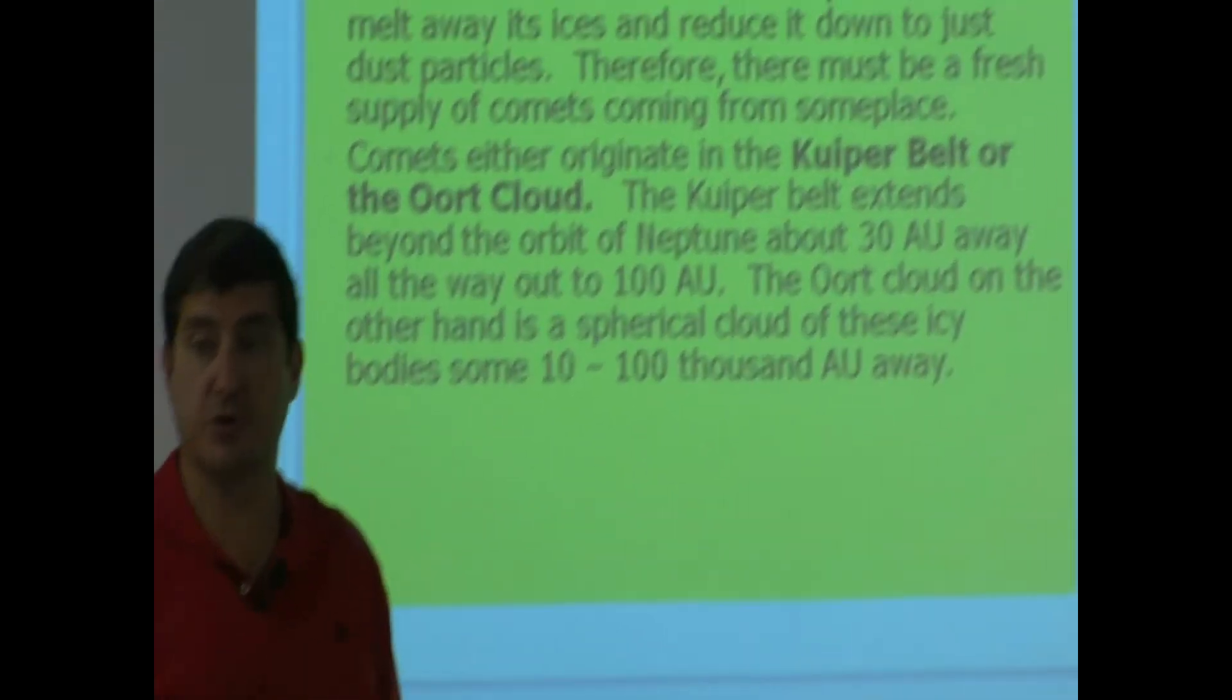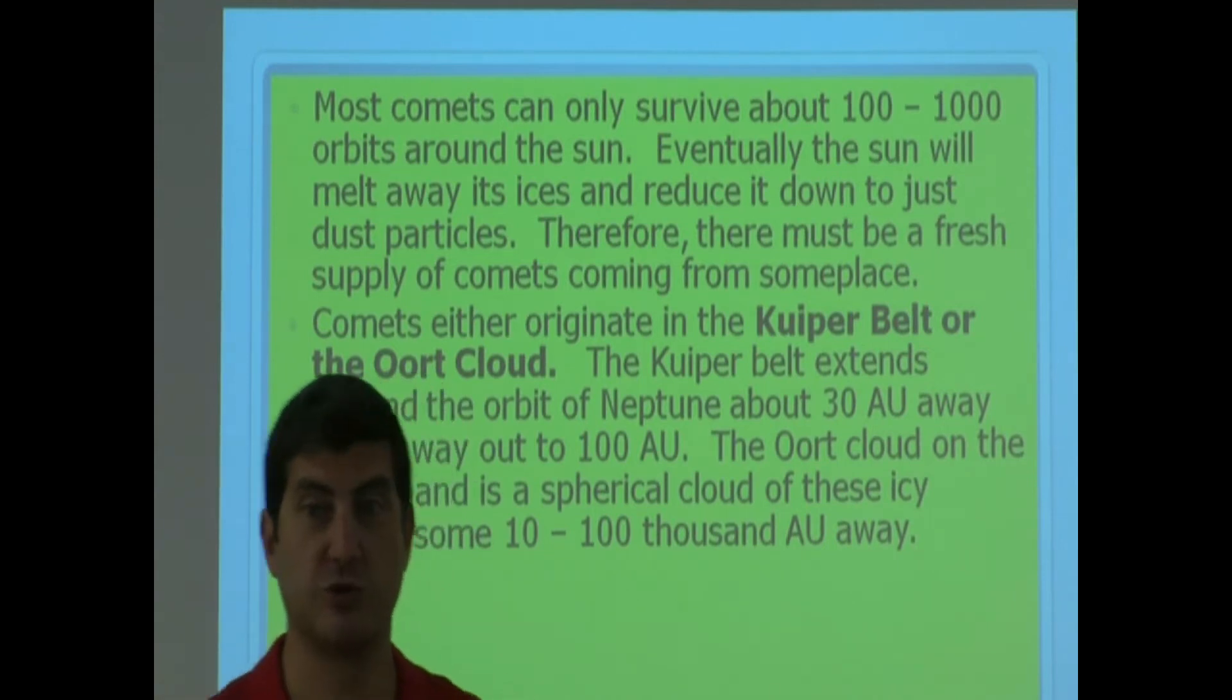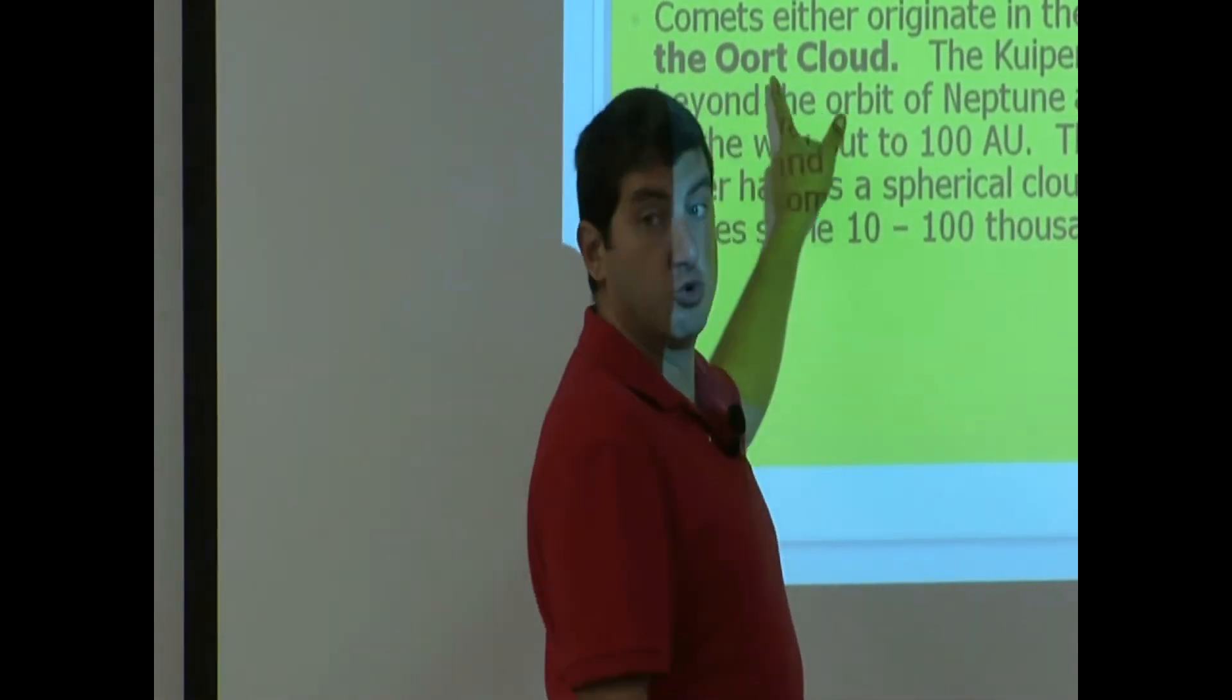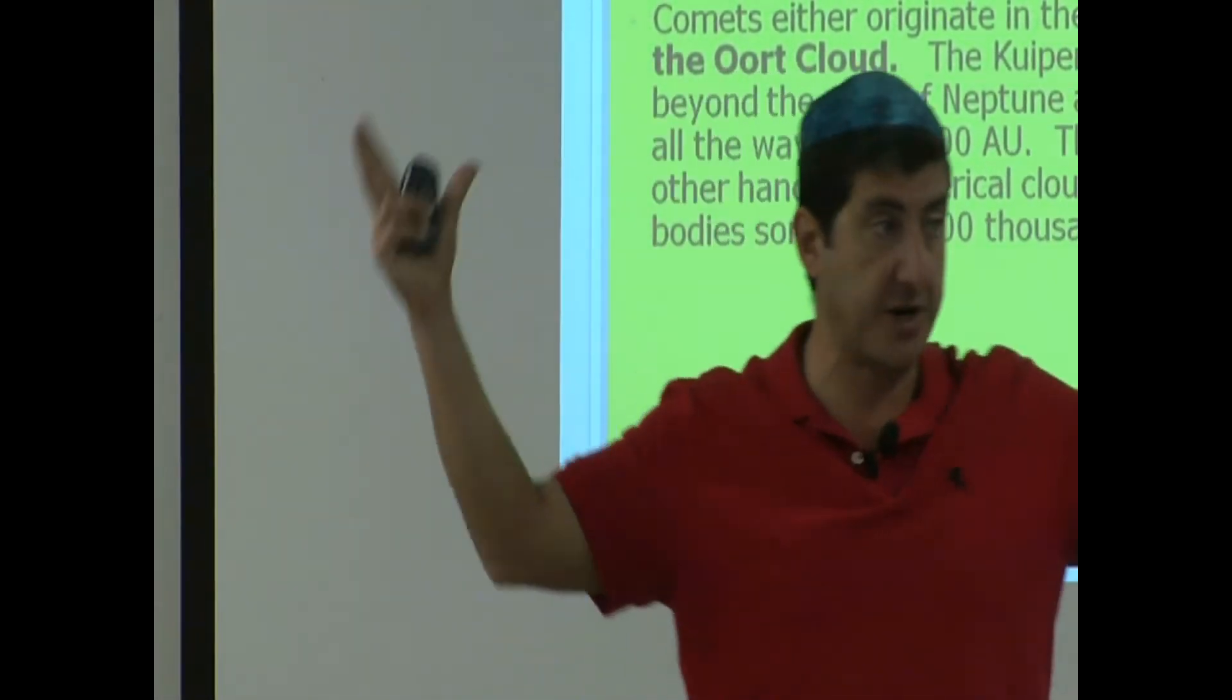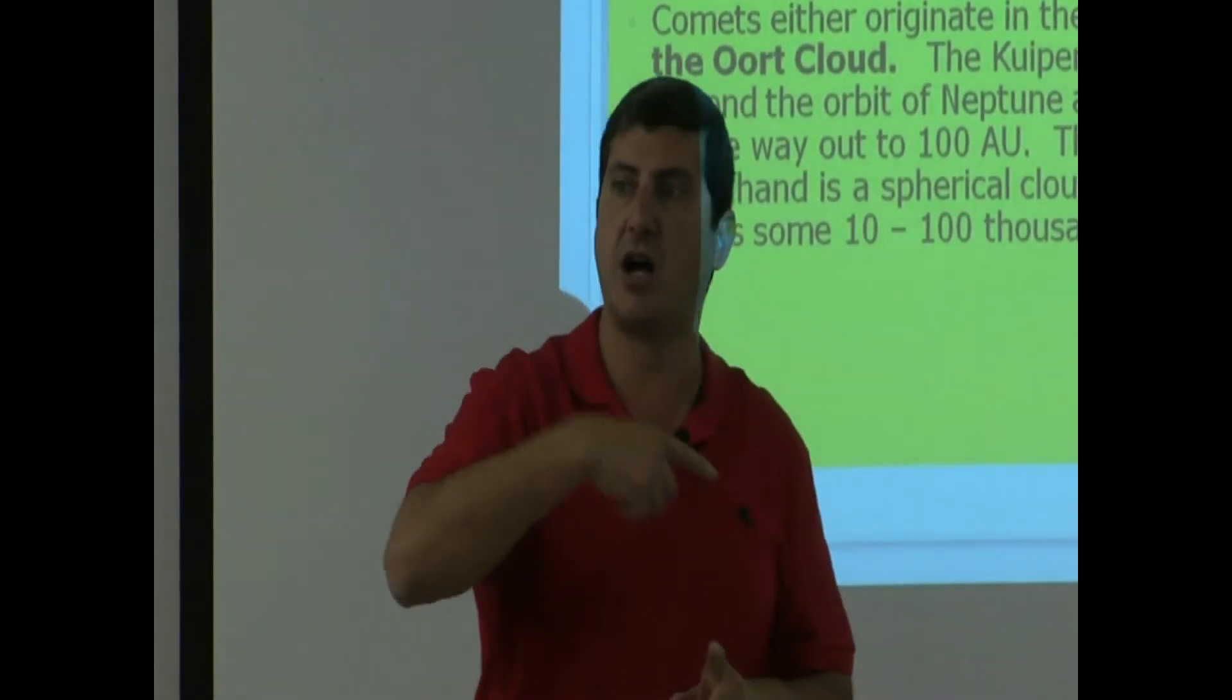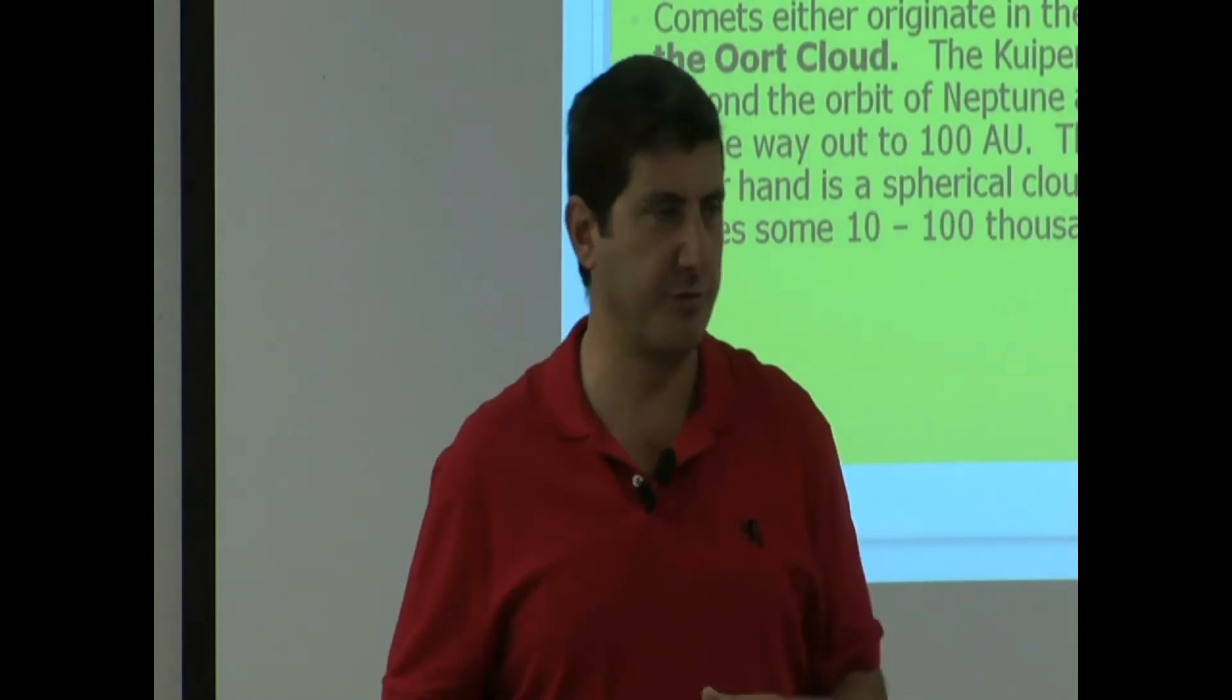That's why Gerard Kuiper came up with the theory that there must be a belt outside of the orbit of Neptune, and this became known as the Kuiper Belt. He theorized that the comets must be coming from there. And then Jan Oort, another scientist, said there's another belt much, much farther away, outside of the Kuiper Belt, known as the Oort Cloud. The Oort Cloud must be the supply of long-period comets, the ones that take longer. Since they theorized this, we've actually discovered many Kuiper Belt objects outside of the orbit of Neptune.